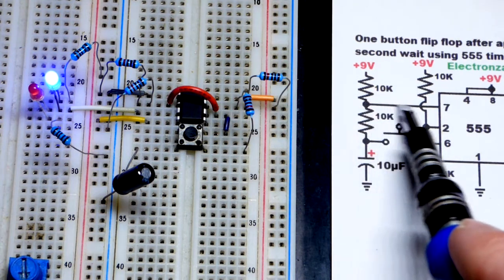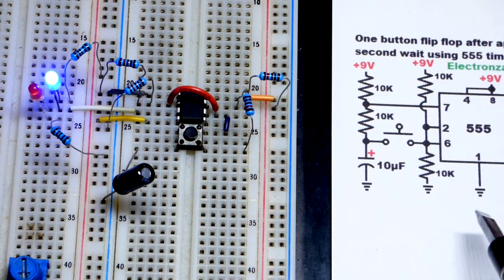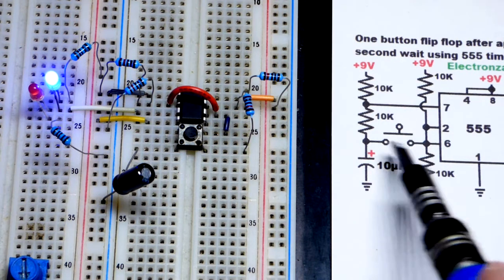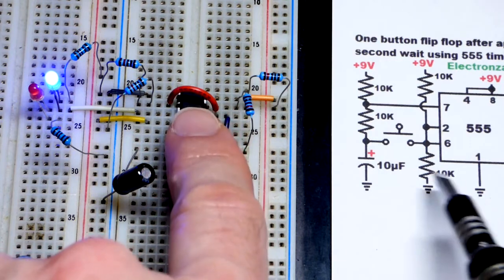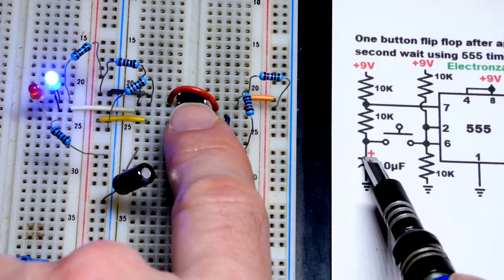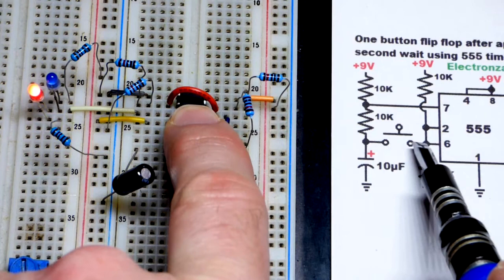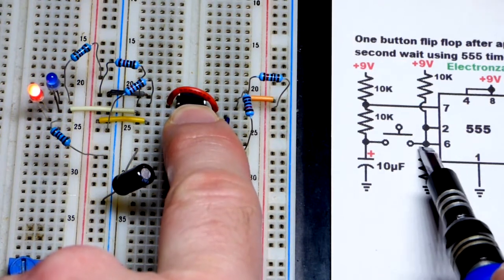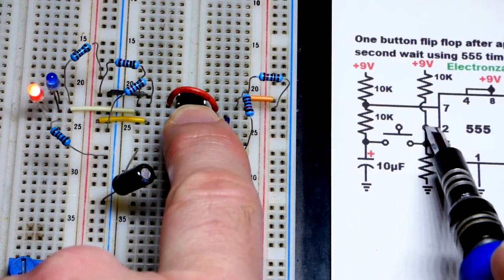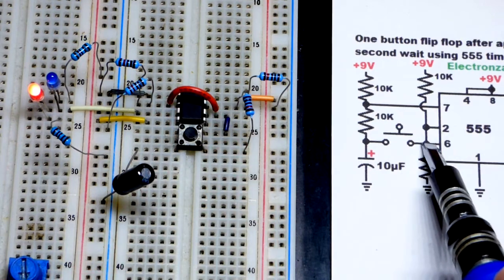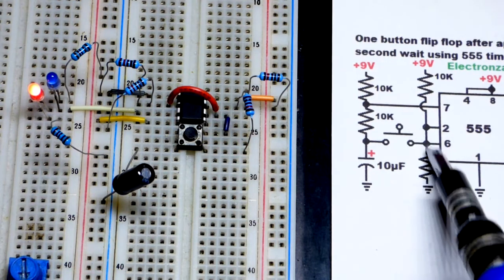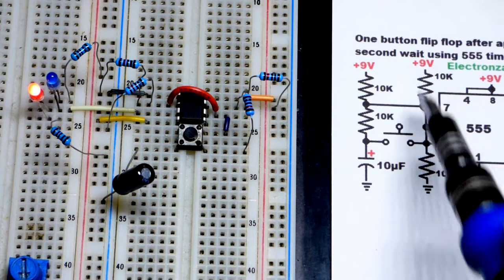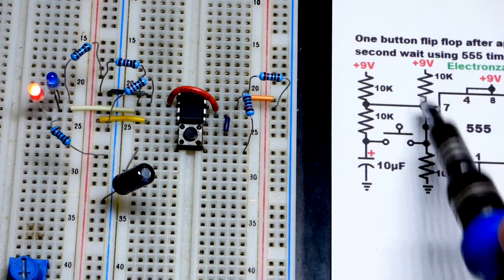It will discharge all the way to zero volts. So now I'm going to close the button here, and so we got zero volts at the capacitor. When I press the button you get that zero volts, and I can hold it down as long as I want at pin 2 and pin 6. When I release it, it is at the halfway point right there.